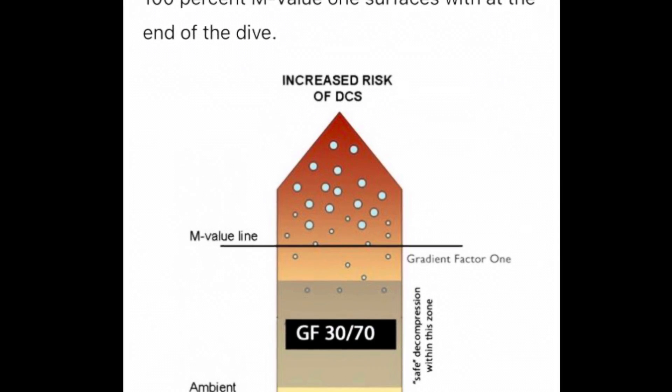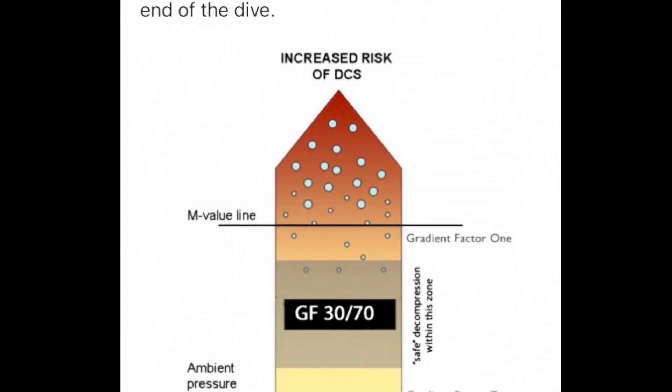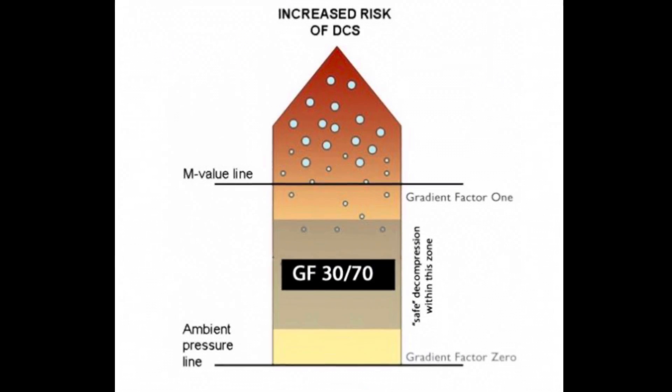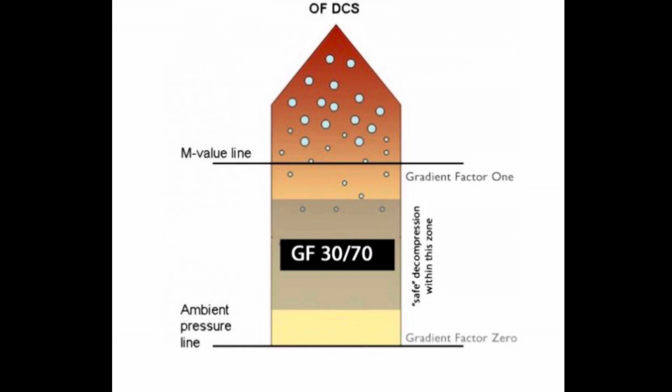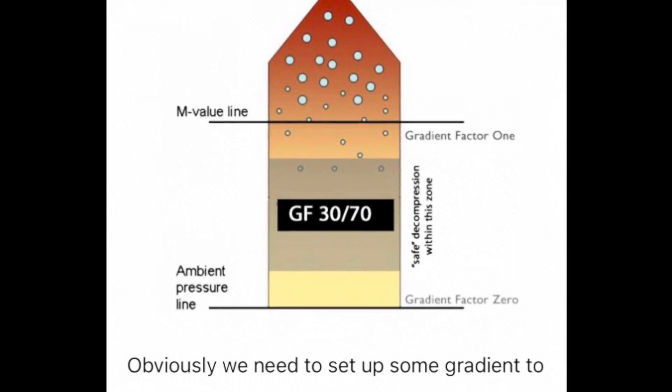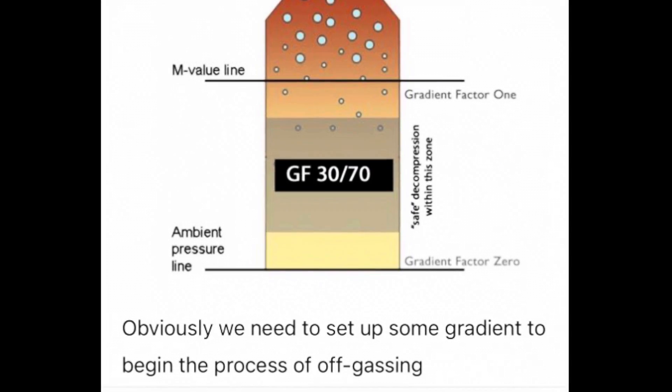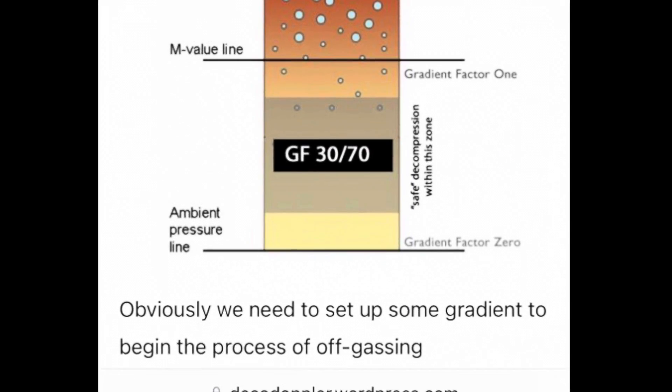The high gradient factor defines how close to the 100% M value one surfaces with at the end of the dive. The M value means the maximum tissue saturation, so 100% is the point where the maximum tissue saturation — the M value — is on the verge of critical bubbling.